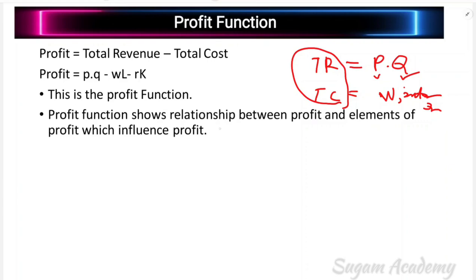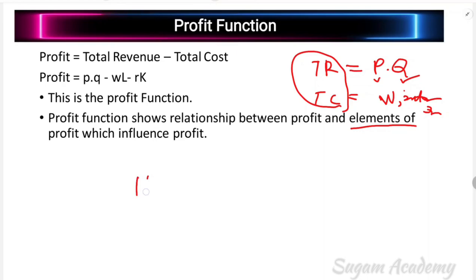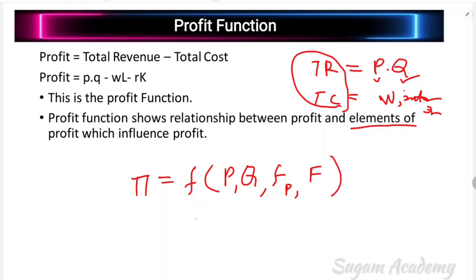Therefore, profit also indirectly depends on the price of goods, quantity of goods, factor prices, and quantity of factors. This is the profit function. In equation format: profit is a function of price, quantity of goods, factor prices, and the quantity of factors.